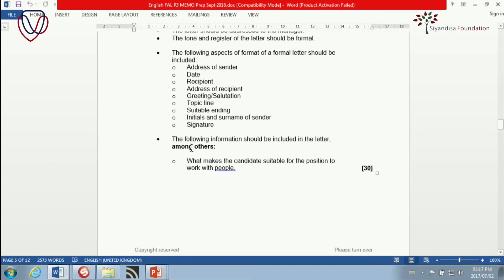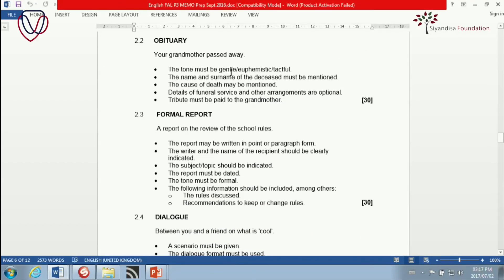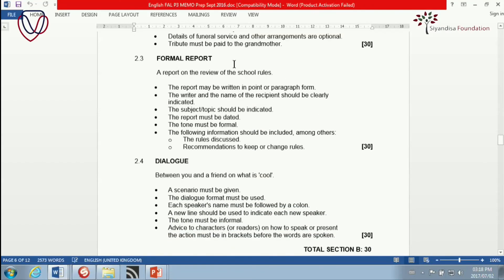Letter of application. Remember that this is a formal letter. Letter should be addressed to the manager. Tone and register. Formal. Address of sender. Date. Recipient. Address of recipient. Now, please note recipient. The person. Greeting or salutation. Topic line. Suitable ending. Initials and surname of sender. Signature. Following information should be included in the letter among others. What makes the candidate suitable for position to work with people? Then, the obituary. Your grandmother passed away. Tone must be gentle, euphemistic and tactful. Name and surname of the deceased must be given priority of place as the title. Cause of death may be mentioned. Yeah, that is normal, by the way. Details of funeral service and other arrangements are optional. No. Please include details of the funeral service. The funeral will be held at the church of the magnificent sound system on date, whatever. Tribute must be paid to the grandmother. That is important. It actually specified that.